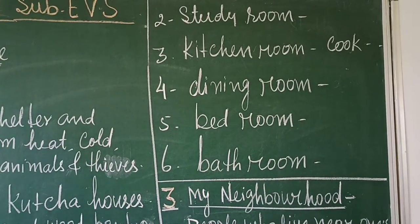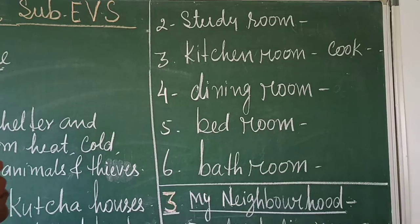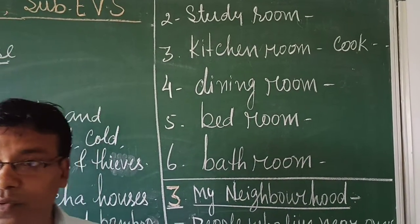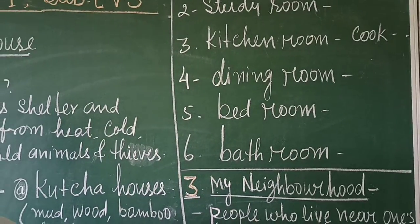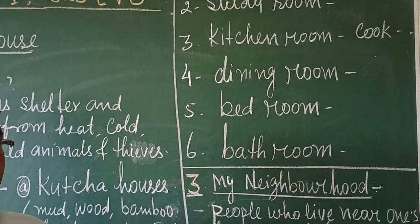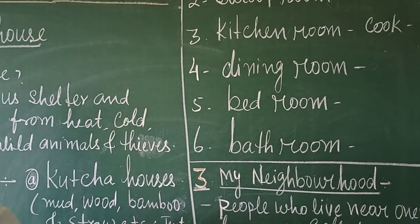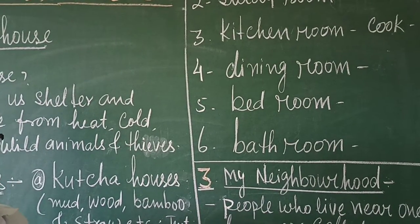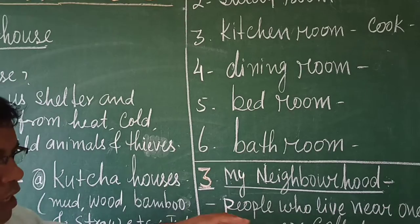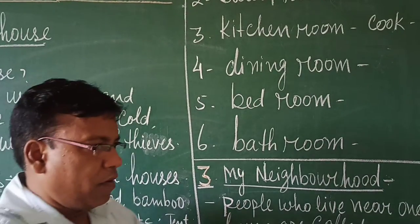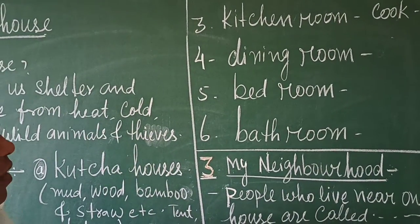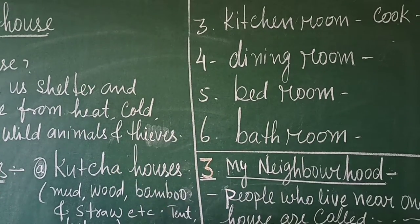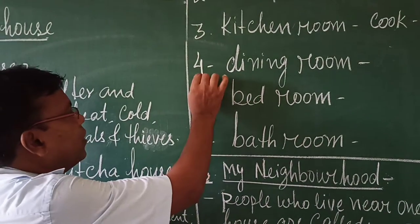Now we shall move to the third point, that is the kitchen room. We all know what we do in the kitchen room. In the house we see our mother go to the kitchen room where she cooks food and vegetables and keeps different vessels there. So this is the kitchen room.